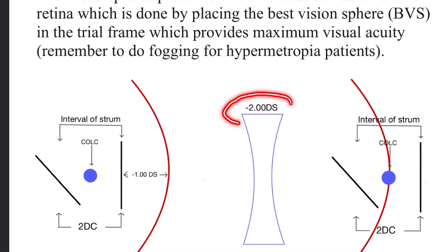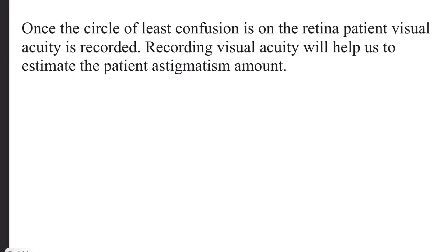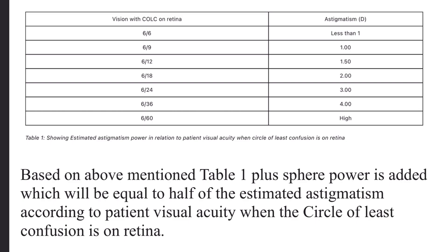In our case, we have used minus two as our best vision sphere, which places our circle of least confusion at the retina. Once the circle of least confusion is on the retina, the patient's visual acuity is recorded. Recording visual acuity will help us estimate the patient's astigmatic amount. Once you have got your patient's visual acuity with best vision sphere, suppose your patient is reading six by eighteen, so it is estimated that the uncorrected astigmatism is around two diopters.